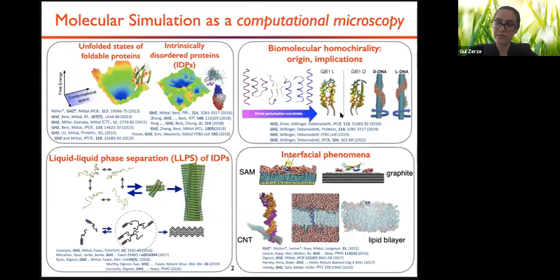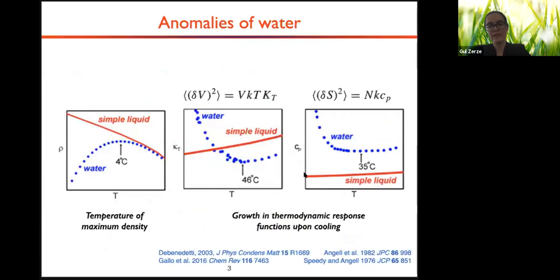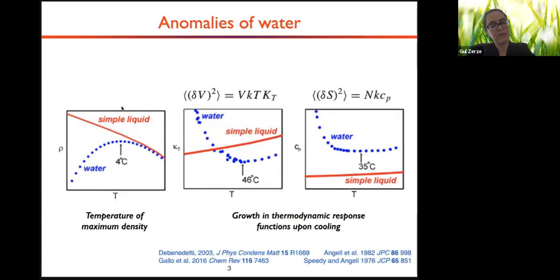None of the biological phenomena I find very interesting would happen in the way that we know without water. So there must be something that makes water very special, and I'm pretty sure you already know that there are a lot of things that make water very special. When we look at the physical properties of water, we see that they are fundamentally different from those of most other substances. The most familiar one is the volumetric anomalies of water — water shows a maximal density at four degrees Celsius at ambient pressure. But it is not just that. Thermodynamic response functions of water, such as isothermal compressibility and heat capacity, also show abnormal behavior.